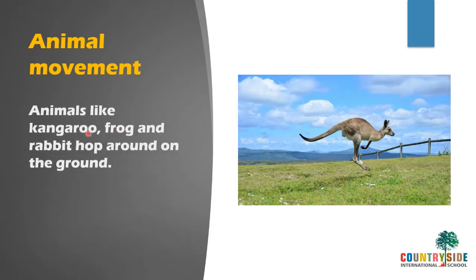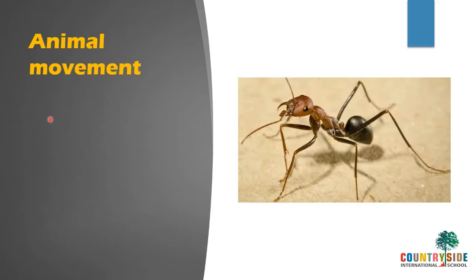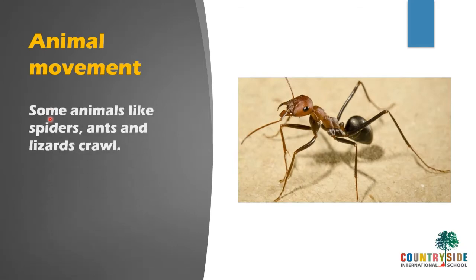Animals like kangaroo, frog, and rabbit hop around on the ground — they take small jumps and move around. Some animals like spiders, ants, and lizards crawl. You must have seen ants crawl on the ground and walk.